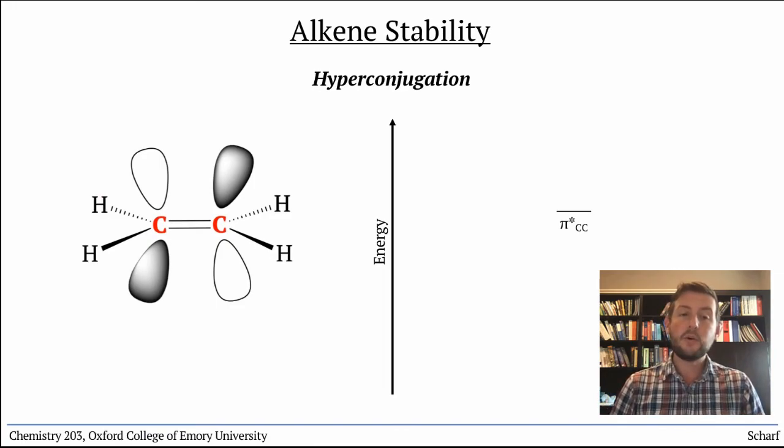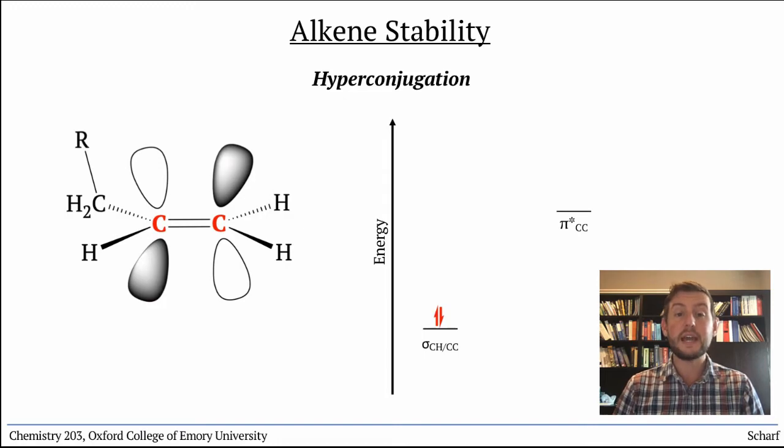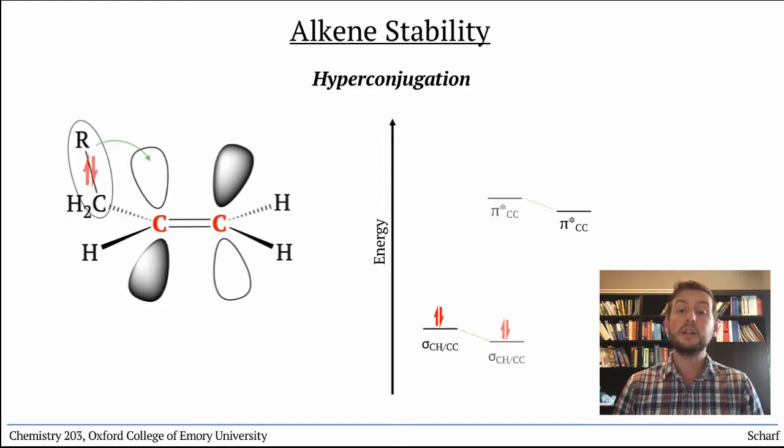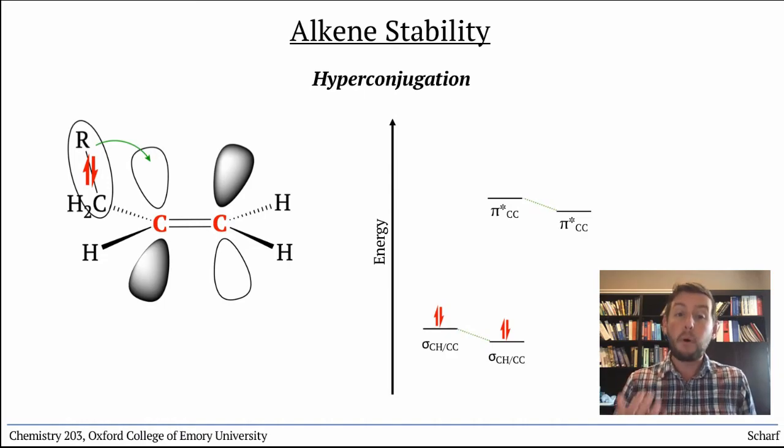And empty orbitals can be satiated or stabilized by any electron pairs that can overlap with them. The pi-star orbital can align with the adjacent C-C or C-H sigma bonds, lowering the energy of the bonding electrons and raising the energy of pi-star C-C, both of which contribute to added stability.